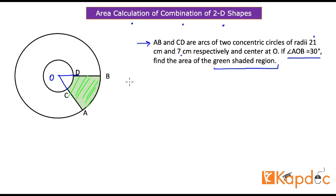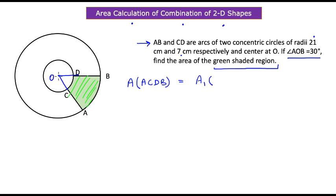When you look at this diagram carefully, the required area of region ACDB is equal to the difference of two sector areas. The first area A1 is the sector made by arc AB, which is sector AOB. The second area A2 is the smaller sector made by arc CD, which is sector COD.